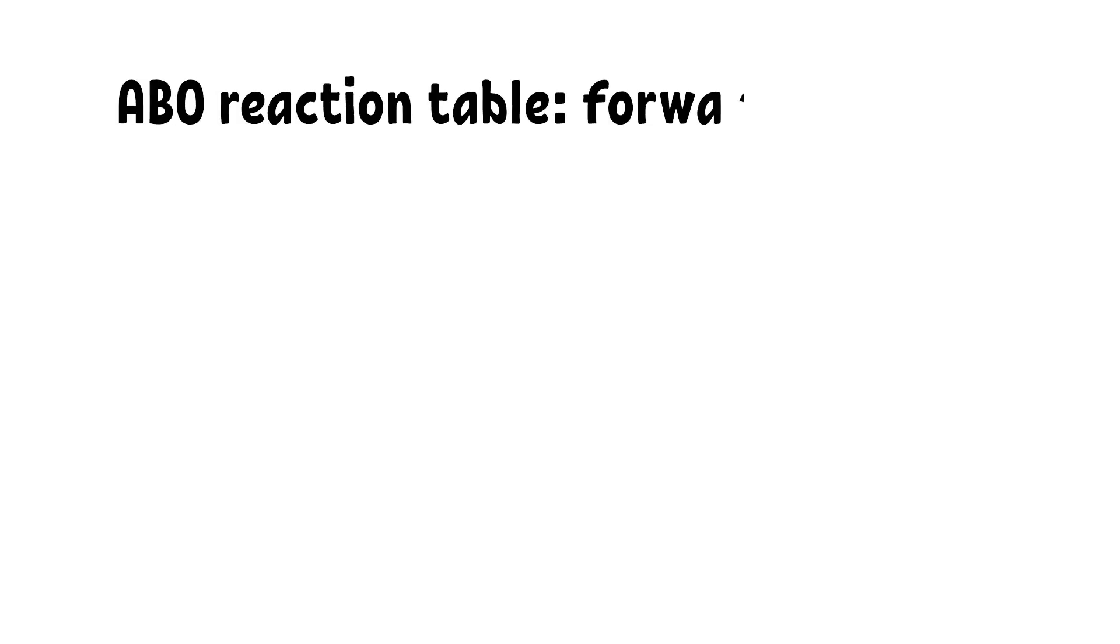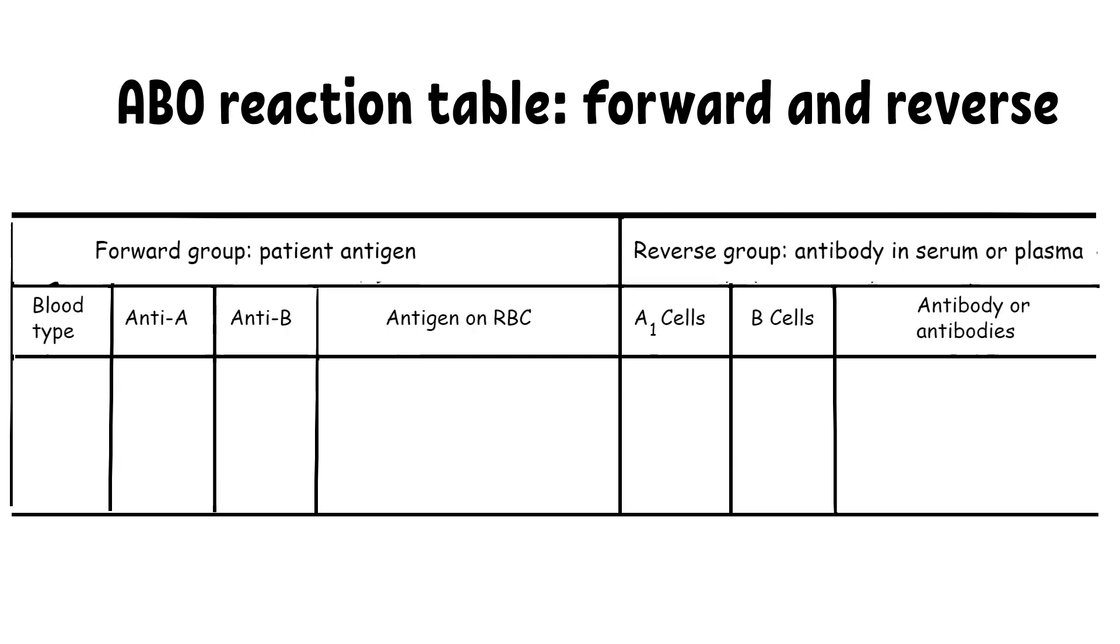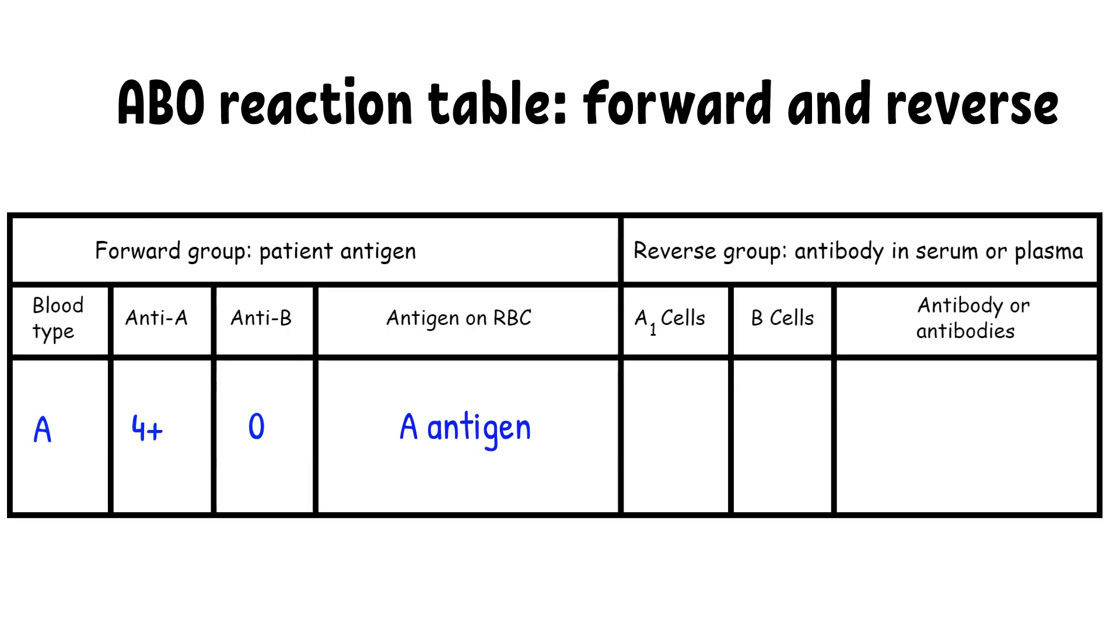Blood group A: the person will have A antigen on the surface of red blood cells. Our body does not program to generally produce antibodies toward our own antigen, which means that a group A person will make anti-B antibody and not anti-A.